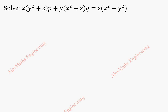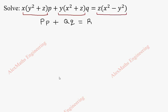Hi students, this is Alex. In this video we are going to find the solution for the given partial differential equation. This is of the form P·p + Q·q = R. From this we can identify: this entire term is capital P, this entire term is capital Q, and this entire term is capital R.